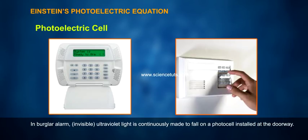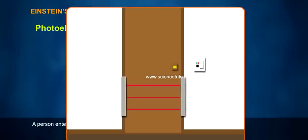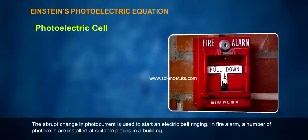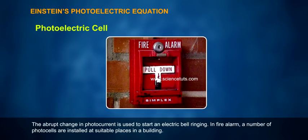In burglar alarms, invisible ultraviolet light is continuously made to fall on a photocell installed at the doorway. A person entering the door interrupts the beam falling on the photocell. The abrupt change in photocurrent is used to start an electric bell ringing.